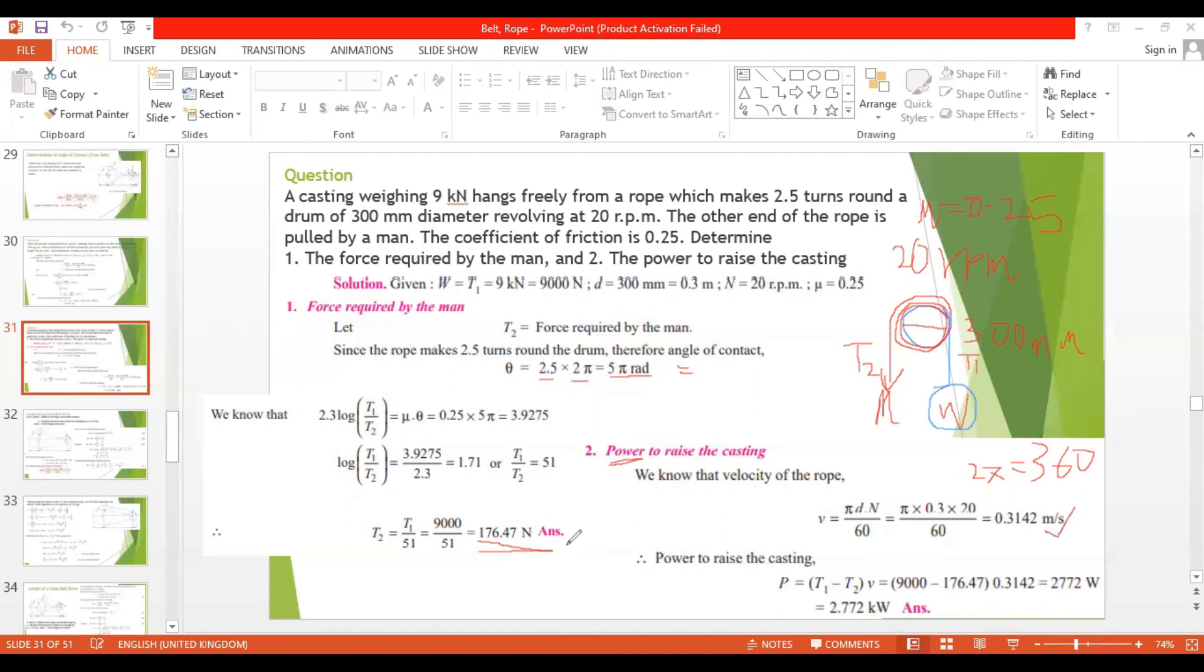So now you found v, you already found T2, and T1 is given. Whatever the components you need to find the power, it's already given. So when you put it in the equation, P equals T1 minus T2 into v.